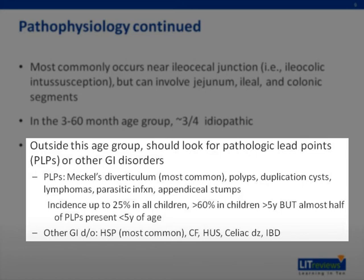Nearly two-thirds of children over age 5 have an identifiable pathological lead point. The most common pathological lead points include a Meckel's diverticulum, polyp, duplication cyst, appendiceal stump, lymphoma, or parasitic infection. Other GI disorders that lead to intussusception to consider include Henoch-Schönlein purpura, cystic fibrosis, hemolytic uremic syndrome, inflammatory bowel disease, and celiac disease.